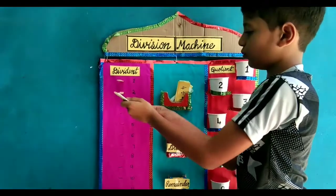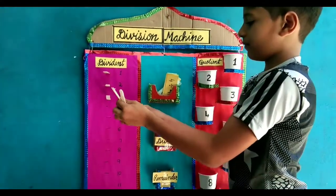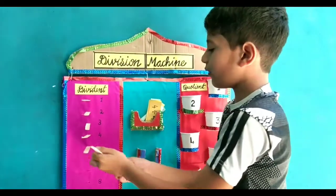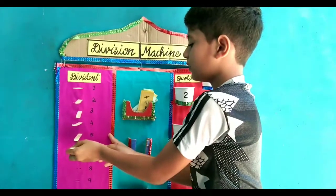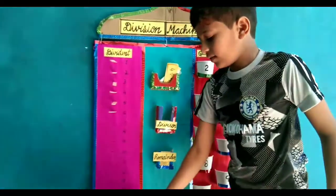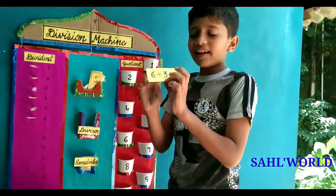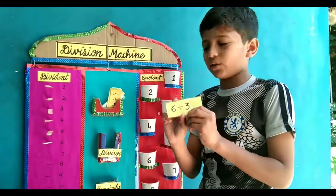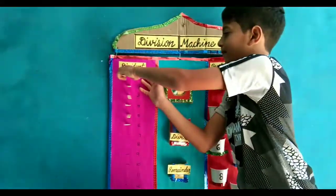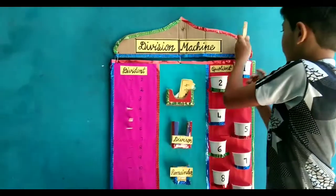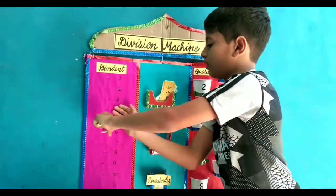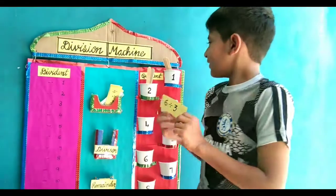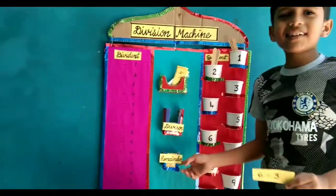One, two, three, four, five, six. Three is the divisor, so we take three ice cream sticks and put into the quotient column. One, two. For the problem six divided by three, two is the quotient and the reminder is zero.